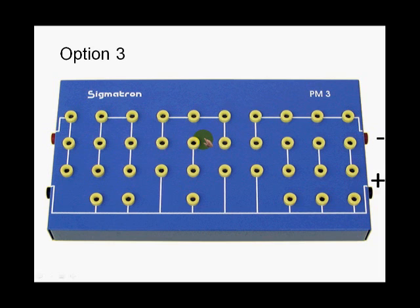The third possibility would be to introduce two jumpers, one here, one there, and finally the resistor, and you've got yourself a closed circuit.